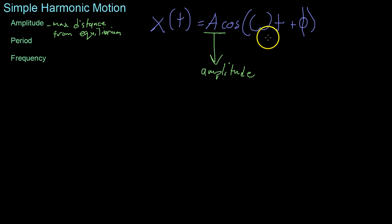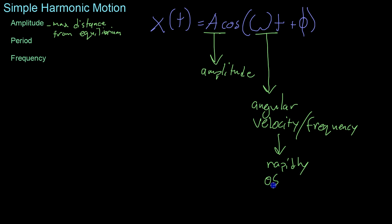Now, this middle term right here is what is known as the angular velocity, which makes sense that we represent it with omega, and it's sometimes also called the angular frequency. Now, the angular frequency is basically a measure of how rapidly something oscillates, whether it goes back in a short amount of time or a quick amount of time.